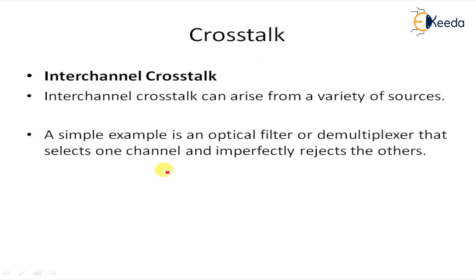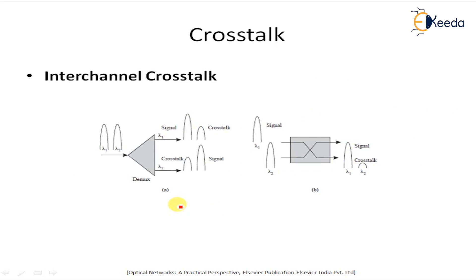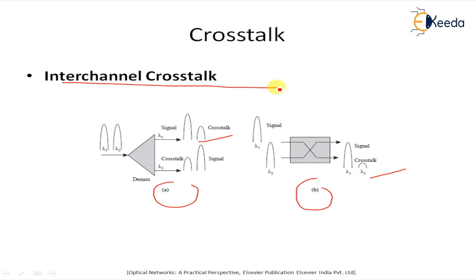The second case is inter-channel cross-talk, which can arise from a variety of sources. A simple example is an optical filter or demultiplexer that selects one channel but imperfectly rejects the others. Another example is an optical switch routing different wavelengths, where cross-talk arises due to imperfect isolation between the switch ports. Estimating the power penalty due to inter-channel cross-talk is fairly straightforward when the wavelength spacing between the desired signal and the cross-talk signal is large compared to the receiver bandwidth.